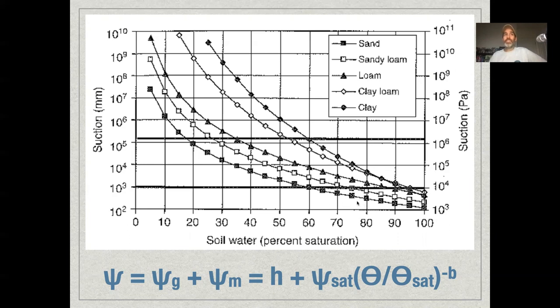And then as the soil dries out, this amount of suction required keeps going up. And the thing that's really important to note here on the y-axis is this is not going up linearly. This is actually on a log scale. So it doesn't just go up a little bit. It goes up orders of magnitude as the soil continues to dry.